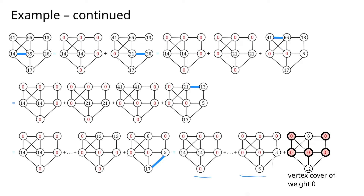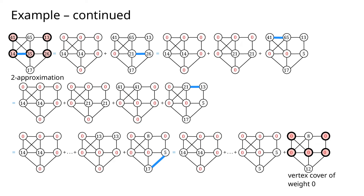In each step we had a 2-approximation by the lemma, and combining these via the theorem gives a 2-approximation overall. What we end up doing is picking the vertices with weight zero from the final reduced instance, which correspond to specific vertices in the original input. Through the sequence of local ratio steps, we've proven this selection is indeed a 2-approximation.